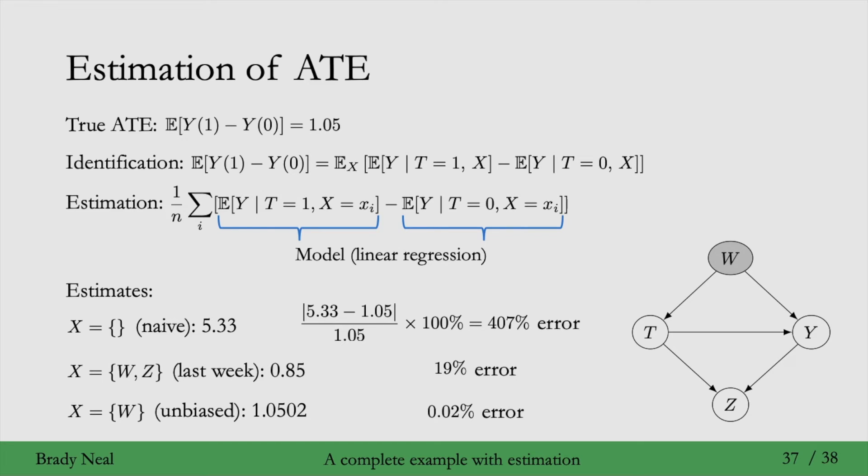So to recap this example, if we do the naive thing and don't adjust for anything, we end up with 407% error. If we adjust for all covariates, so that's W and Z, then we end up with 19% error, because we have collider bias. If we use the causal graph to identify our causal estimate, then we find that we should only adjust for W. And then if we only adjust for W, we end up with 0.02% error. This is because this estimate is actually unbiased, and this error is only due to sampling variability.